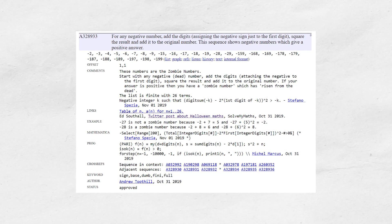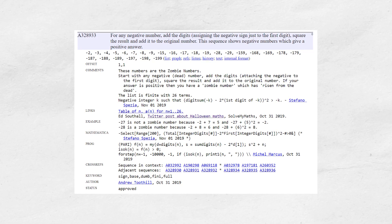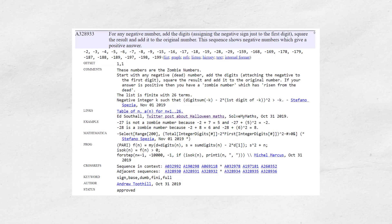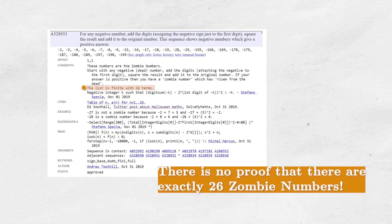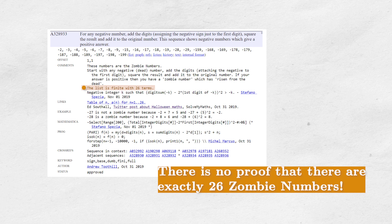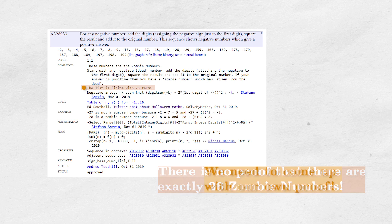They even have their own OEIS page and that's how I found out they existed at all. Interestingly, through this page we can find that there are only 26 zombie numbers and there is no explanation of this fact whatsoever. We need to come up with our own proof. How horrible and exciting at the same time.